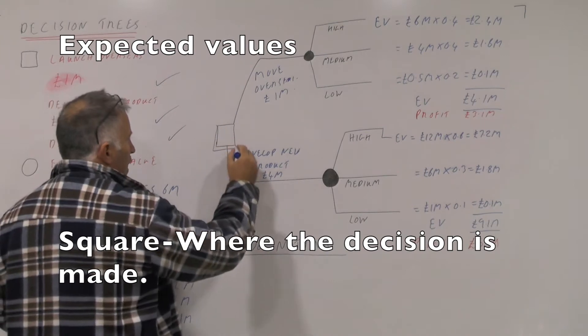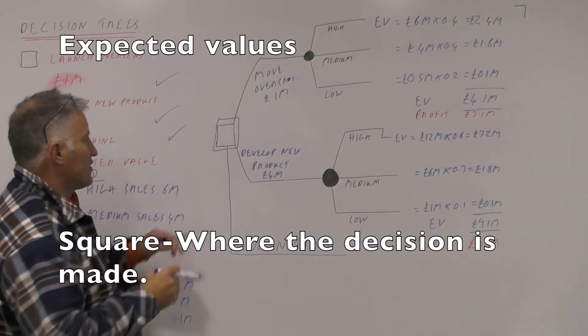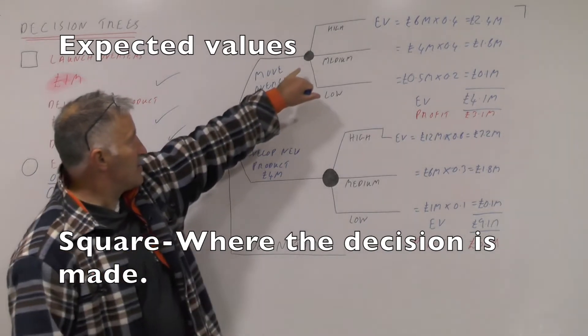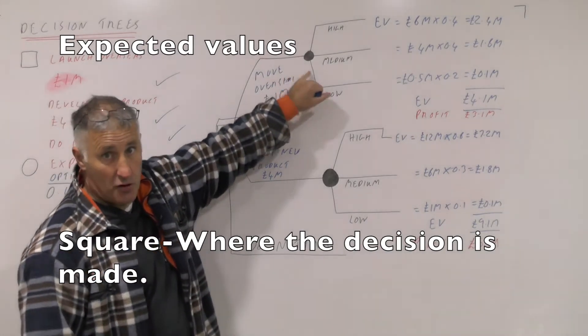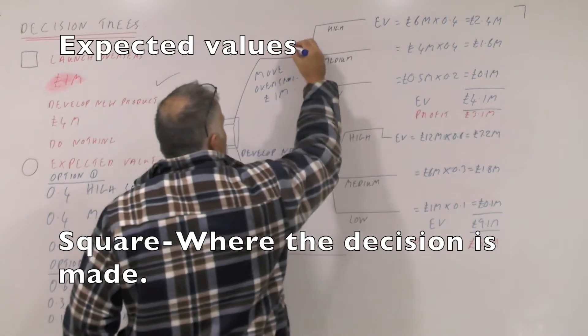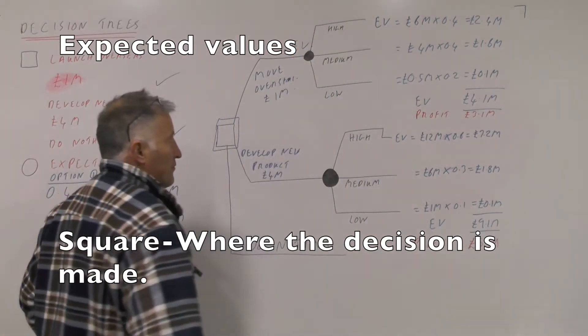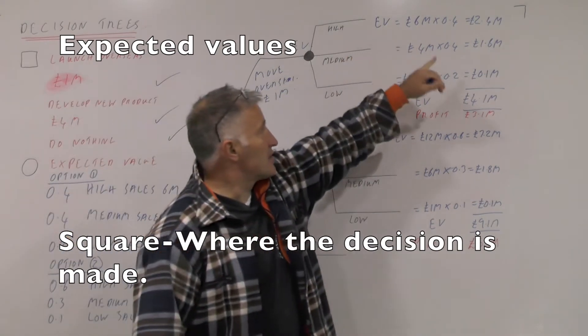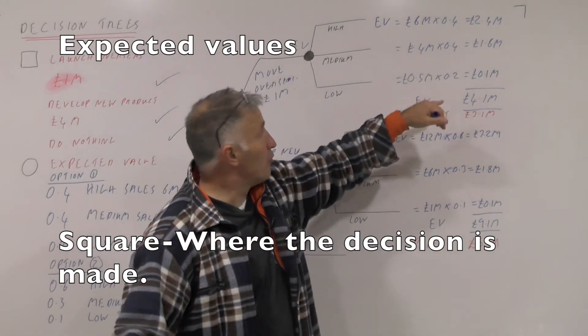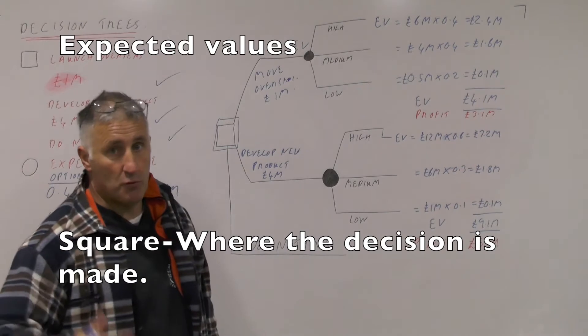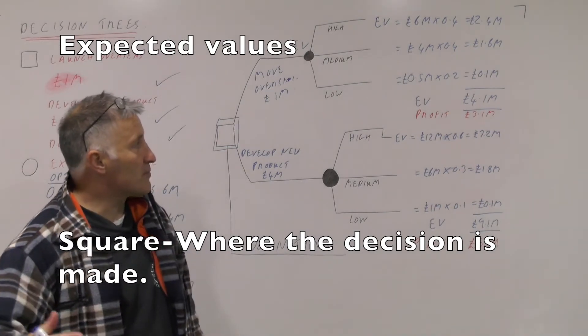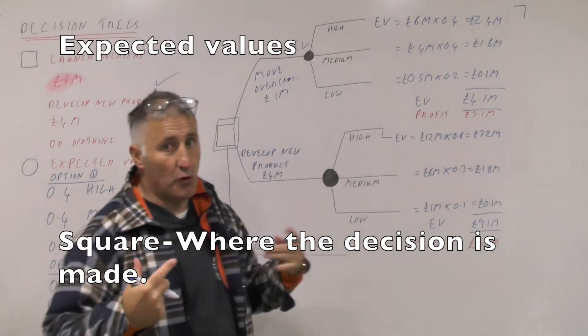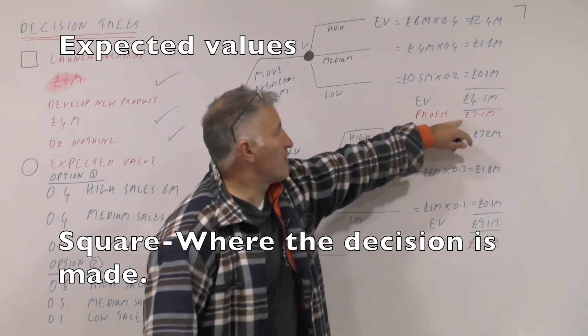This is a square here, and at this point, this is where you make your decision. This circular node here is called expected value. What we do is work all of these out: £6 million times 0.4 equals £2.4 million, £1.6 million times 0.4 equals £0.64 million, £0.5 million times 0.2 equals £0.1 million. You add all those up together, they come to £4.1 million. You get a profit of £3.1 million - we take off the £1 million cost here, so £3.1 million.